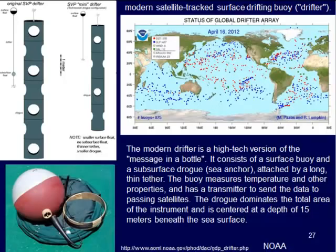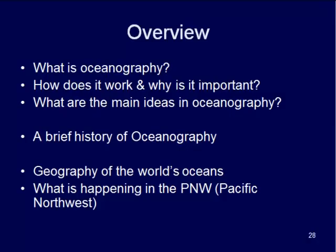Drifters are at the whim of the ocean currents. There are also stationary buoys that are anchored to one spot, so you can get seasonal variations in one location. And there's another type of drifter that can be controlled and set on a course — it can stay on the ocean surface or dive down to deeper depths to measure temperature and salinity variations as you go deeper into the ocean.